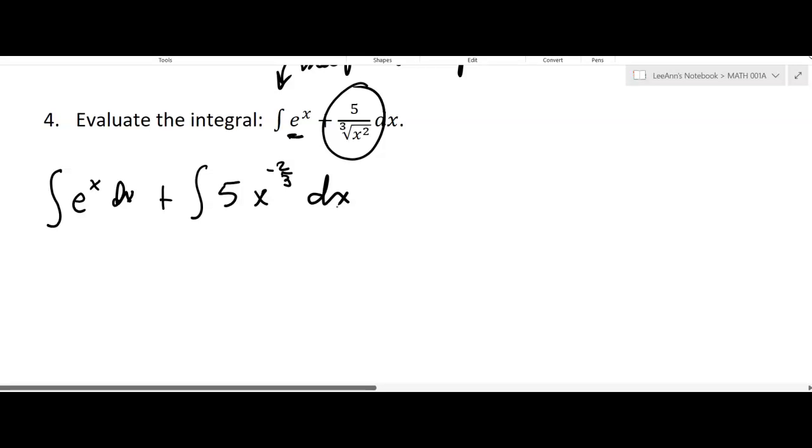You've got the index is 3 and the exponent is 2, so that makes it when you write it in exponential notation x to the negative 2/3.